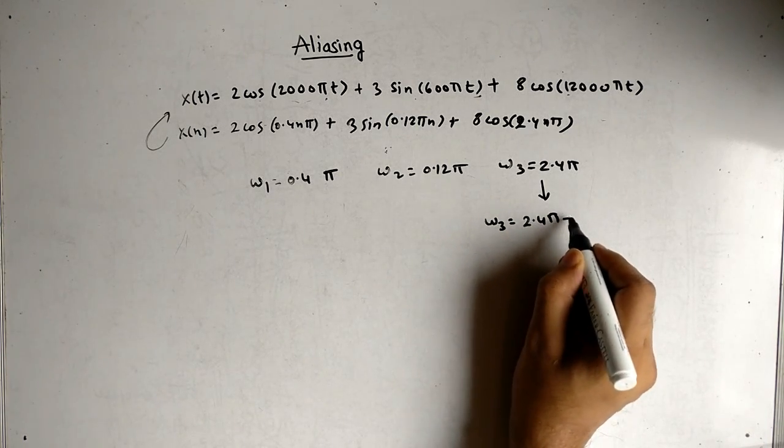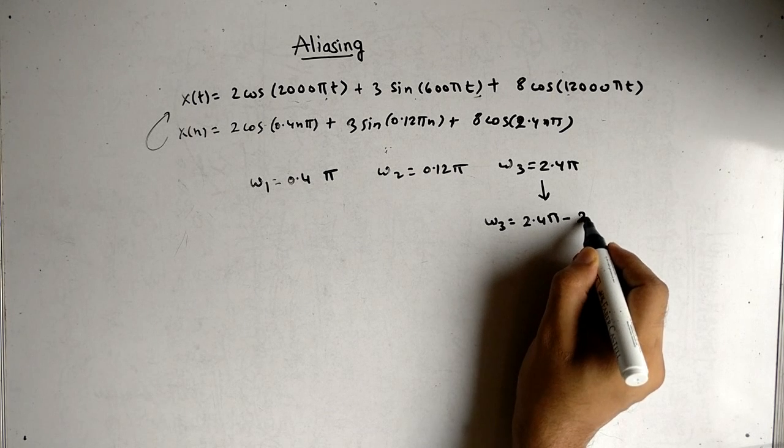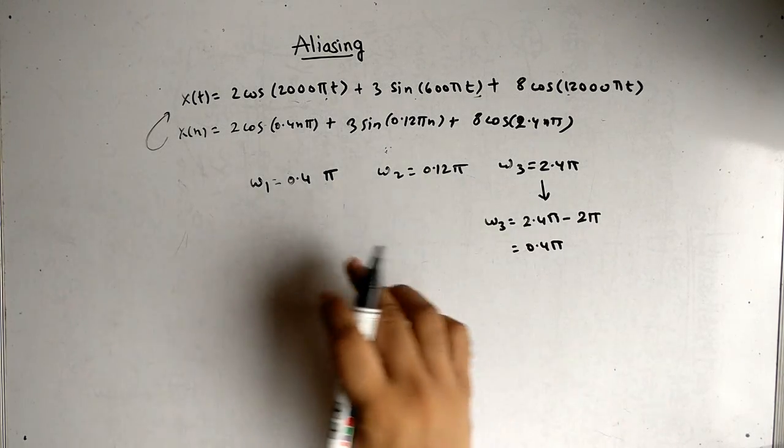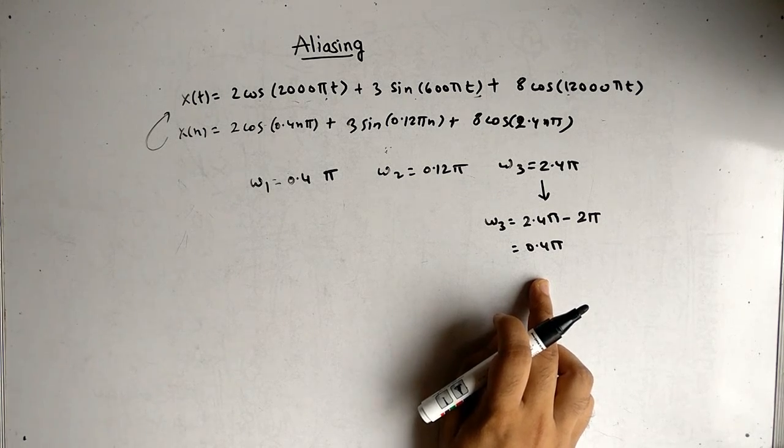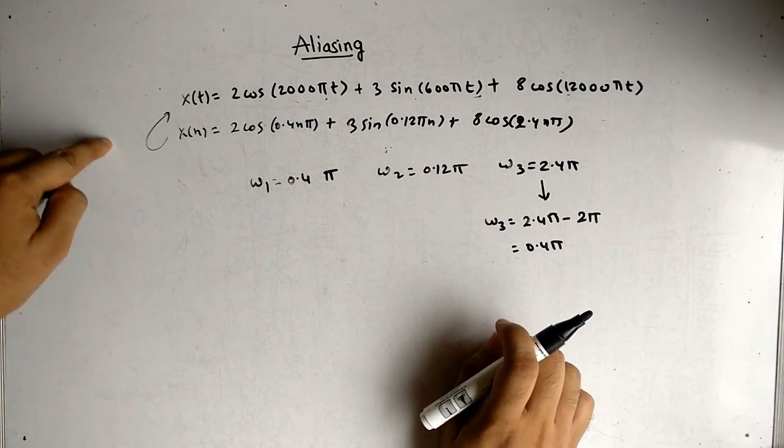So what we have to do is convert this back into minus pi to pi. We will subtract this value from 2 pi. So our answer is 0.4 pi. Now all of these are in the range minus pi to pi, so we can successfully convert x(n) back to x(t).